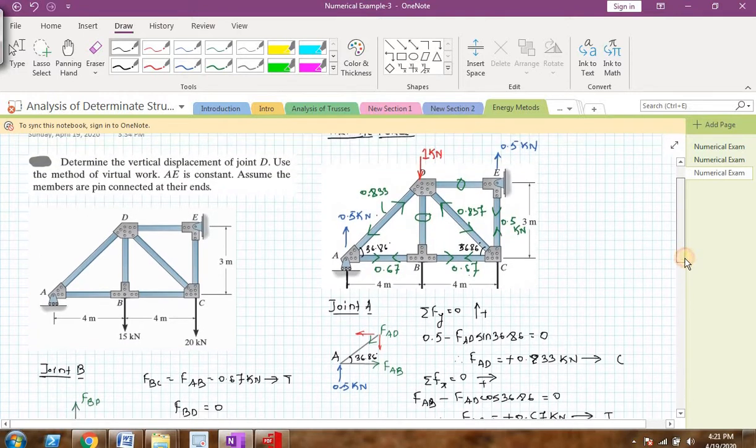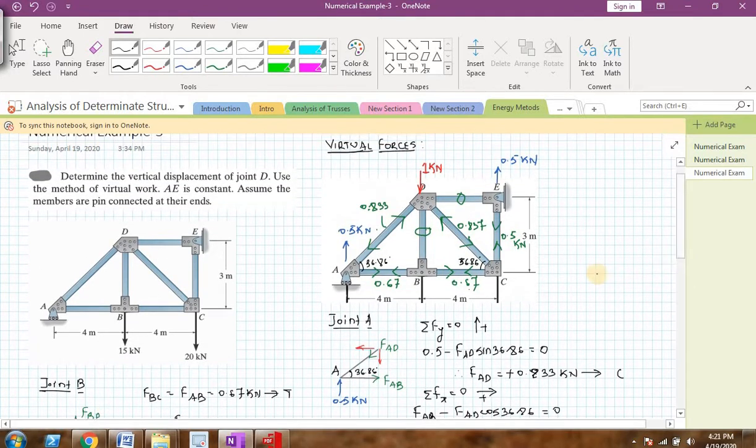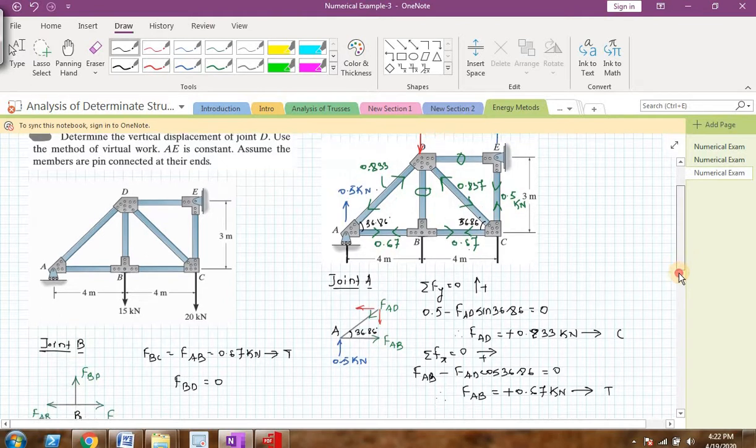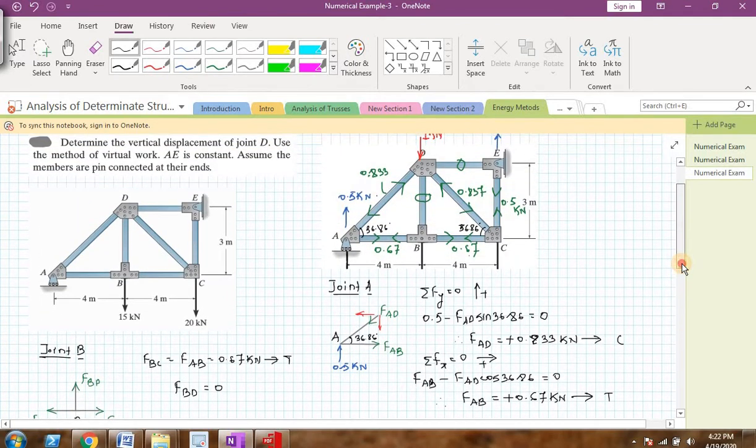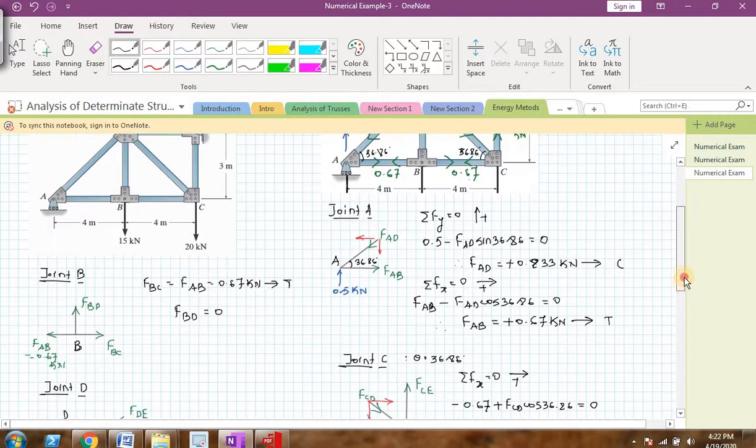After finding the virtual forces, now we need to calculate the real forces. Real forces, I mean the force in each and every member of the truss because of this 15 and 20 kN. Once again, we have to analyze this truss by method of joints, taking each joint separately and finding force in each and every member.